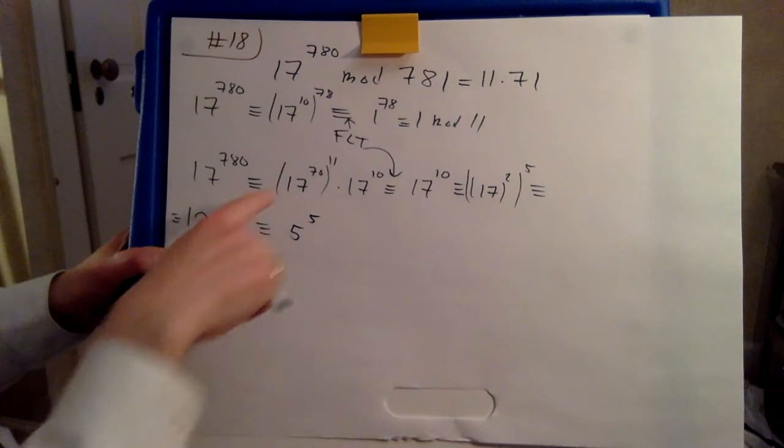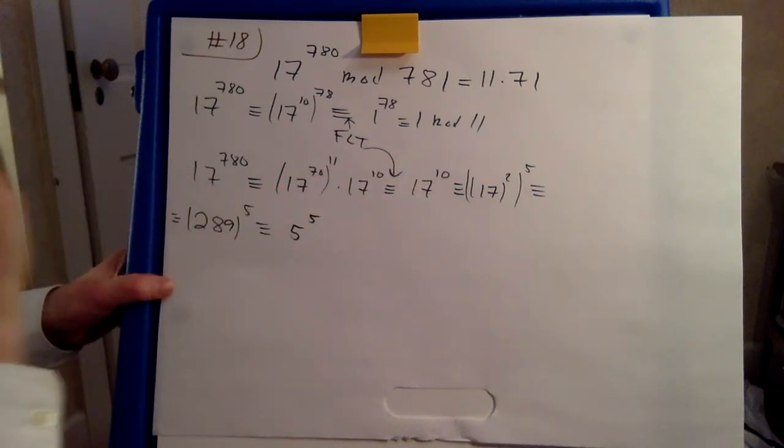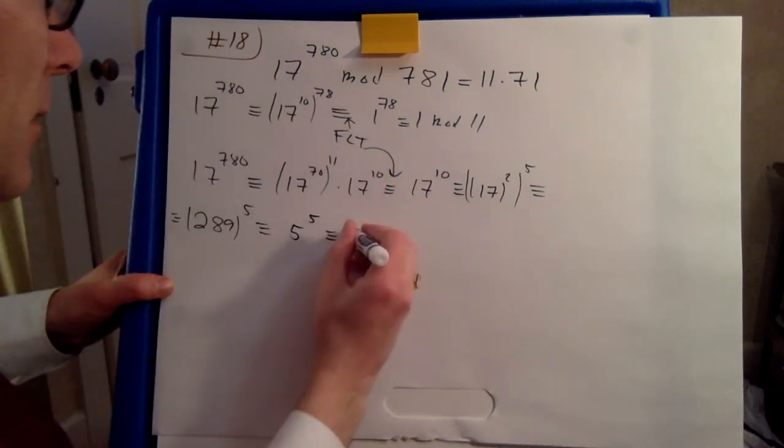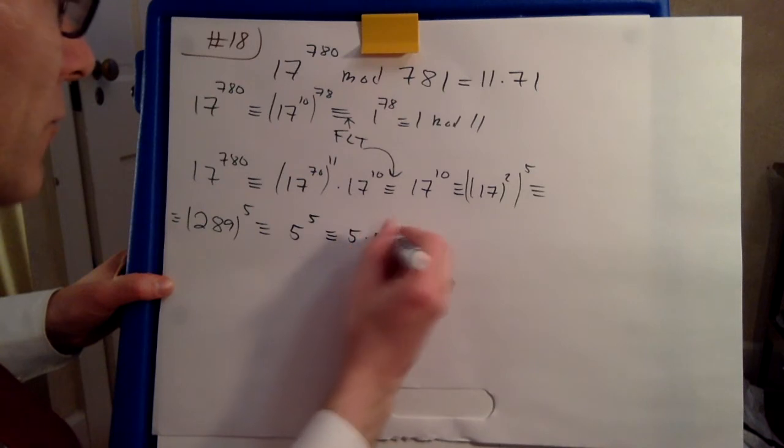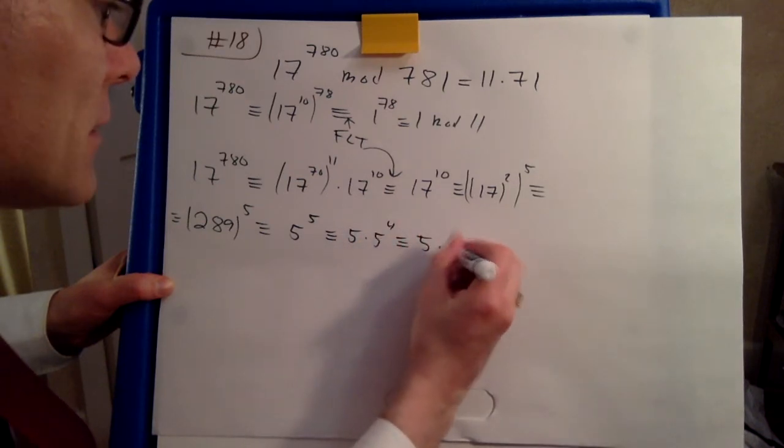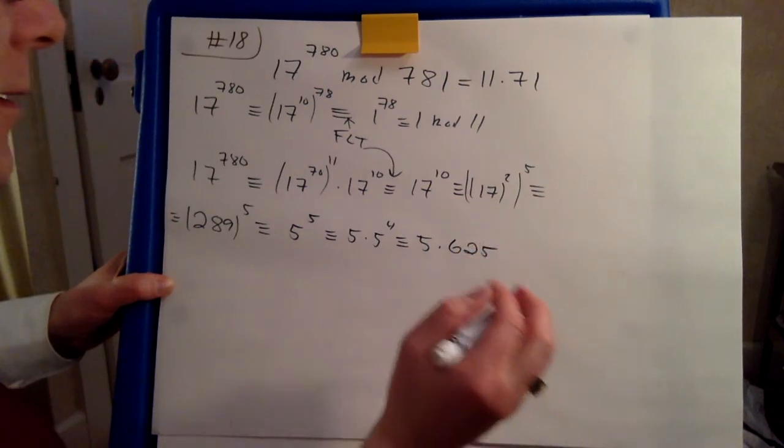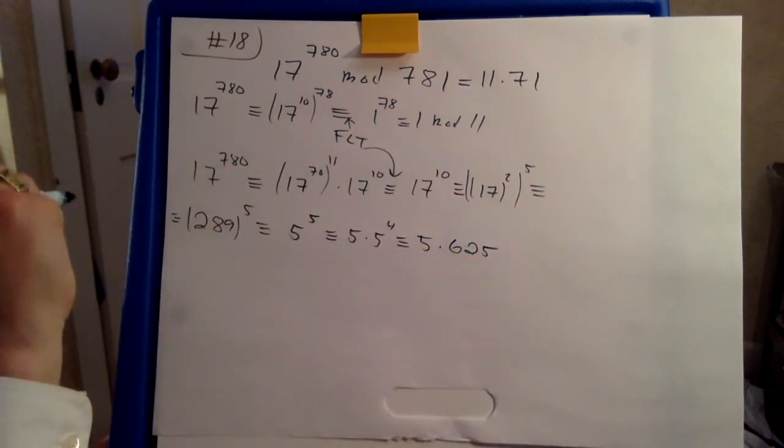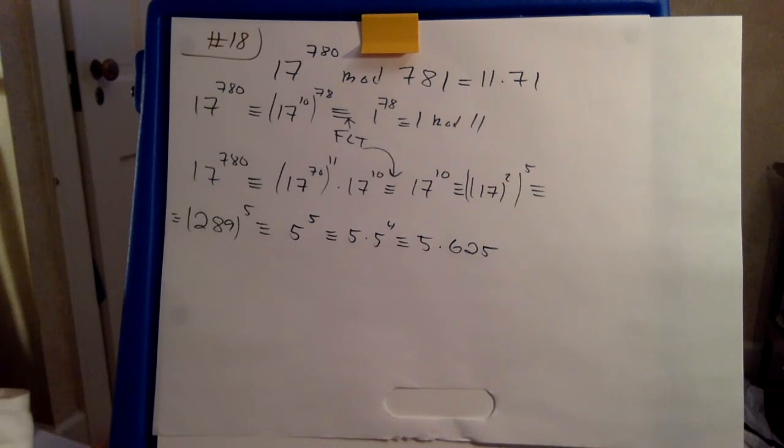Now we do 5 to the 5. Let's probably get the smaller. 5 to the 5. That's 5 times 5 to the 4. And let's just expand out 5 to the 4. That's 625. And now 17 times 17, no 71 times 3.